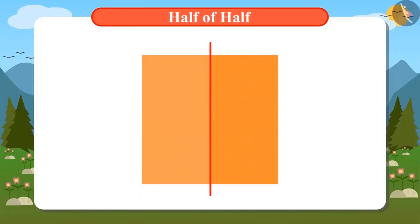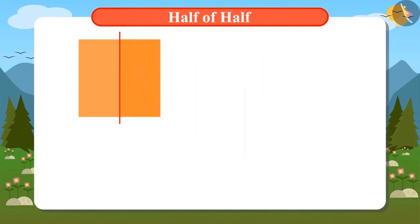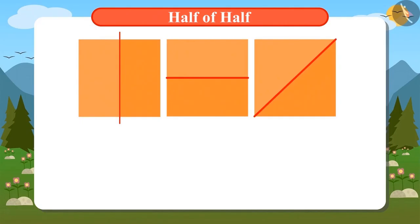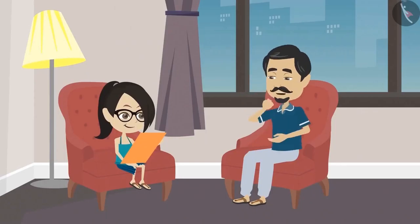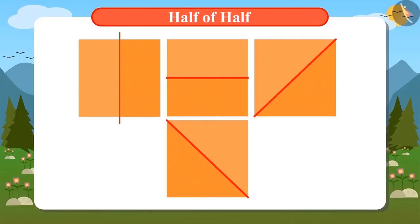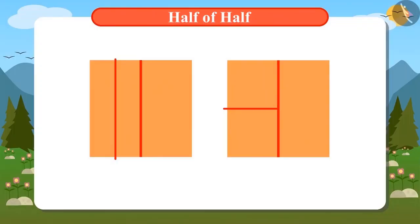You have already divided it into half in one way. I can divide it into half in three different ways — like this, like this, and like this. Absolutely correct, Vandana. Now divide these halves further into equal parts in different ways. We have already divided the first one into two halves in two ways: one from the short side and the other from the long side.